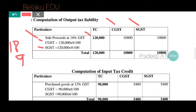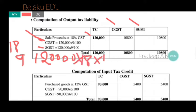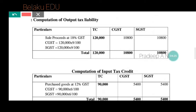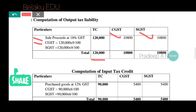Calculating: CGST = 1,20,000 × 9% = rupees 10,800 and SGST = 1,20,000 × 9% = rupees 10,800. So the total output tax liability is CGST 10,800 plus SGST 10,800.